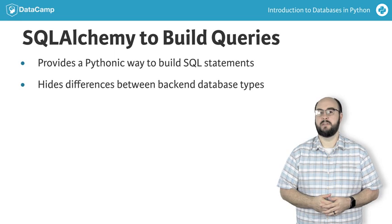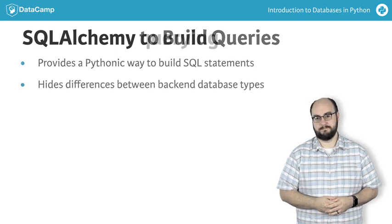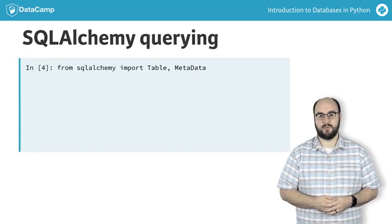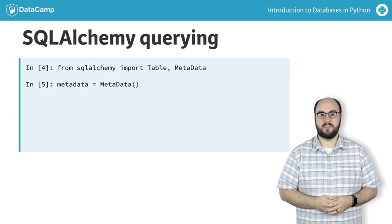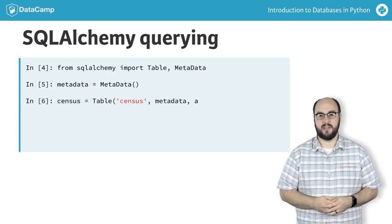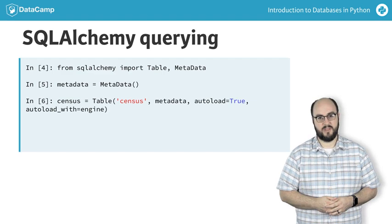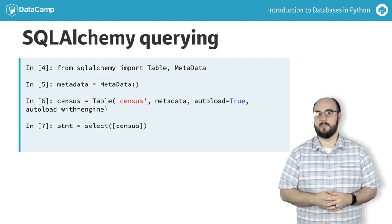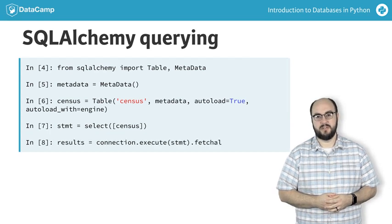Let's rebuild the same query using SQLAlchemy. The first three steps of creating an engine and establishing a connection will be the same. After that, we need to initialize our metadata and reflect the table as we did in the previous section. Then, in line seven, we build our select statement. Finally, we execute the statement and fetch all the results.